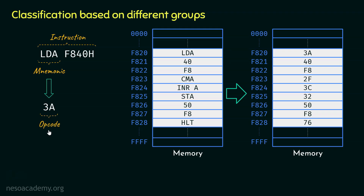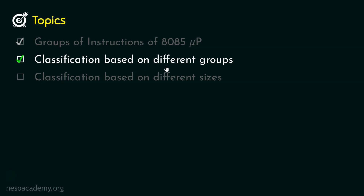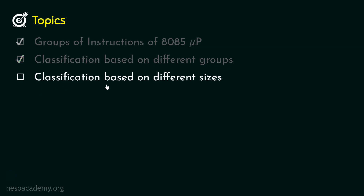Op code is short for operation code. With this hexadecimal code, we as users instruct the 8085 microprocessor to perform the operation 'load accumulator.' It is a code that pertains to a specific operation — that is why we call them op codes. To summarize: the entire thing is the instruction; the portion that helps humans remember what the microprocessor performs is the mnemonic; and the hexadecimal equivalent of that is the op code.